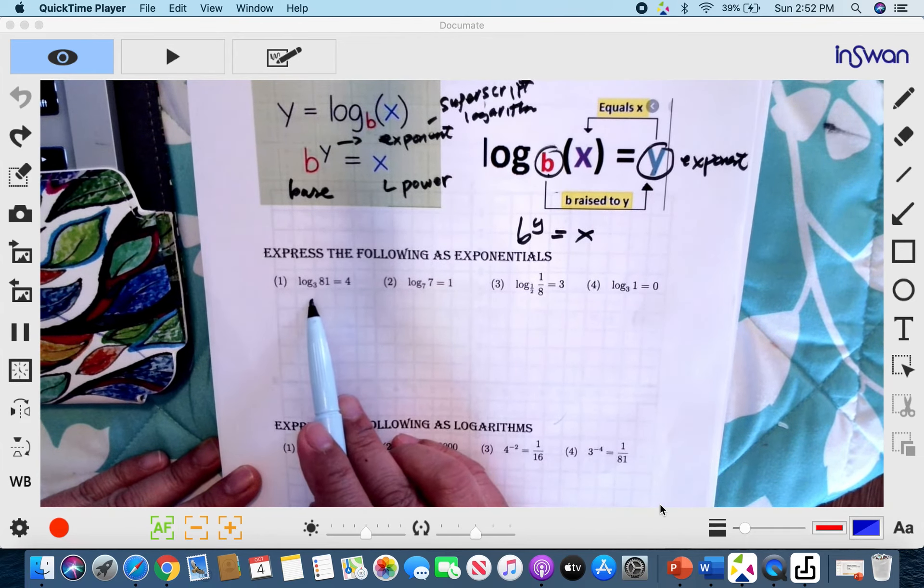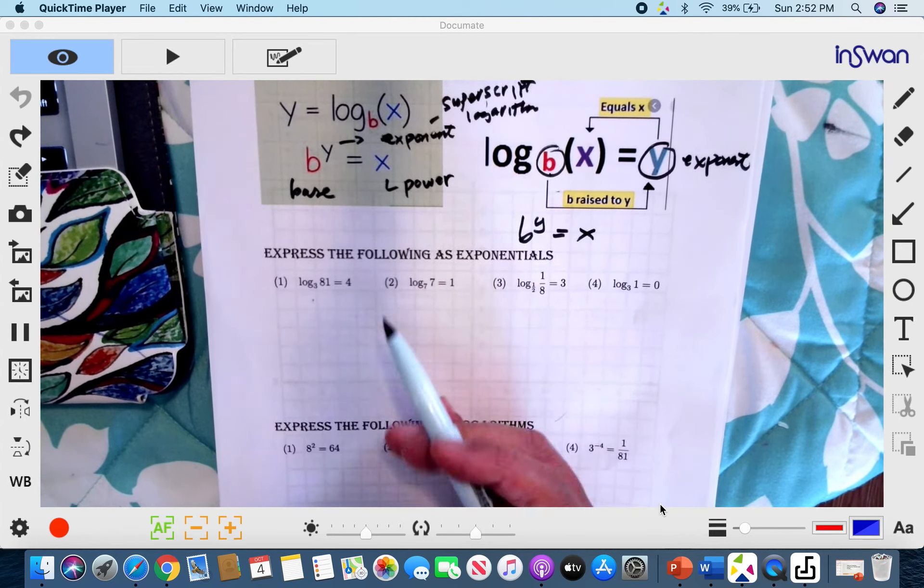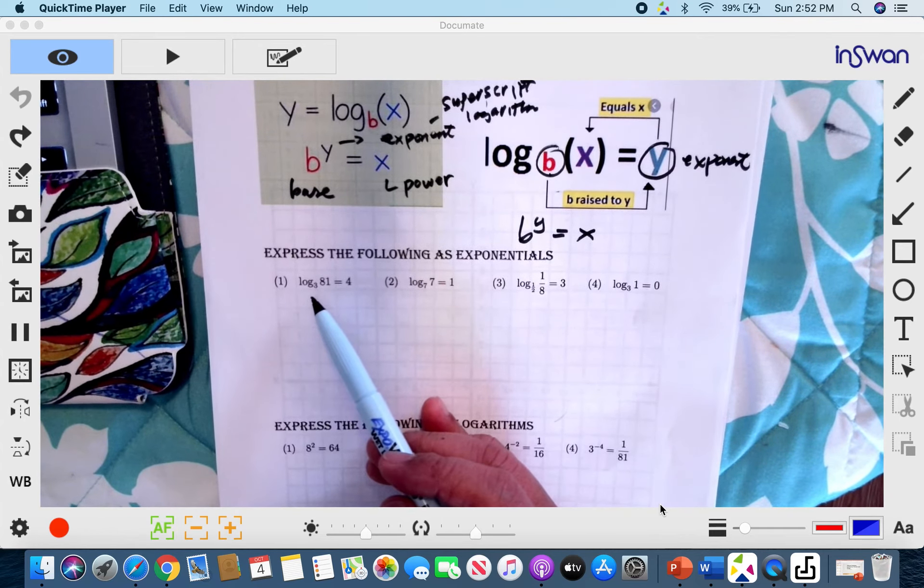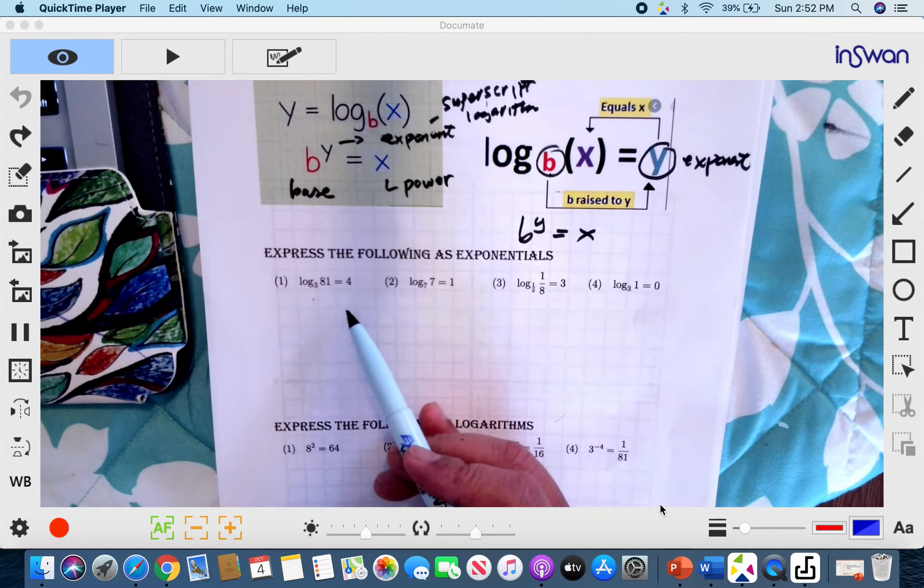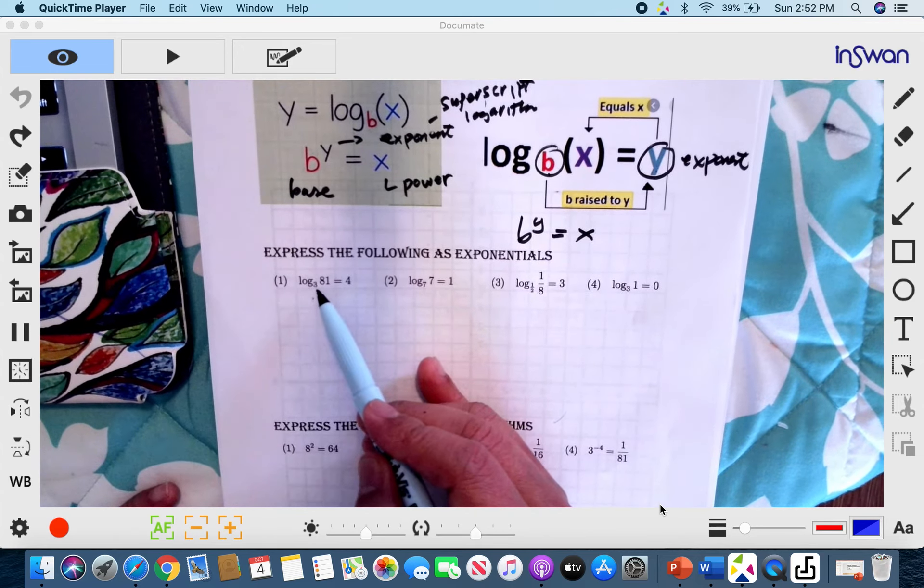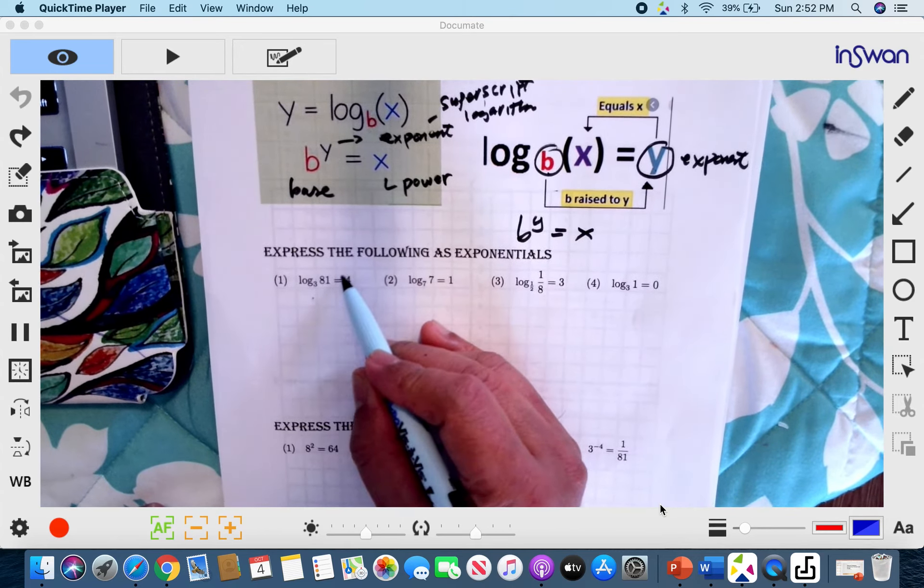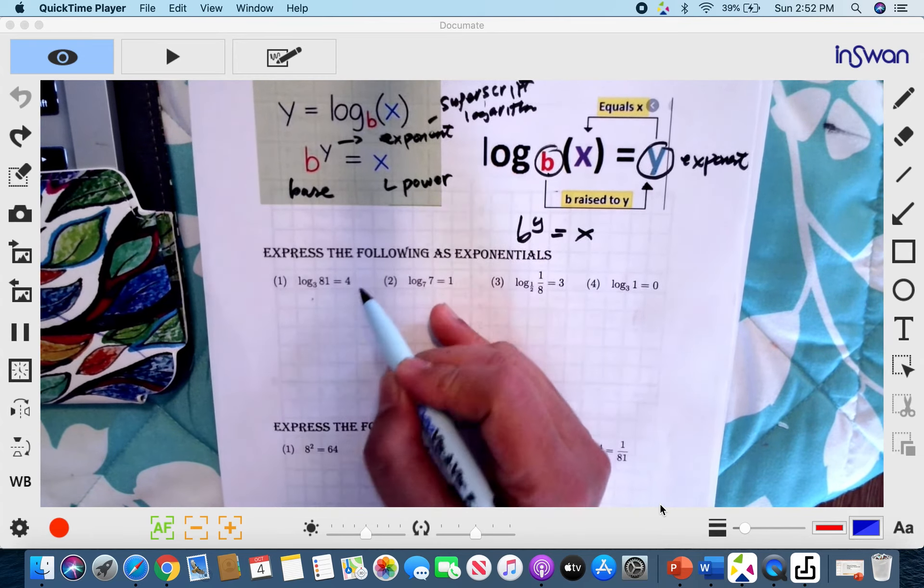So this is logarithm of 81 base 3 equals 4. So you should also know how to say it. You can also say logarithm of base 3 of 81 equals 4 or logarithm of 81 base 3 equals 4. So you see, the subscript is 3, so it's going to be written under. And 4 is your logarithm. It means 4 is our exponent.